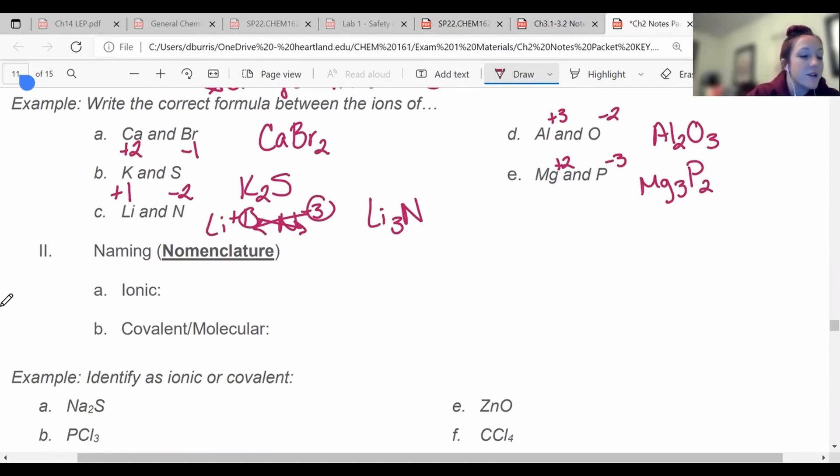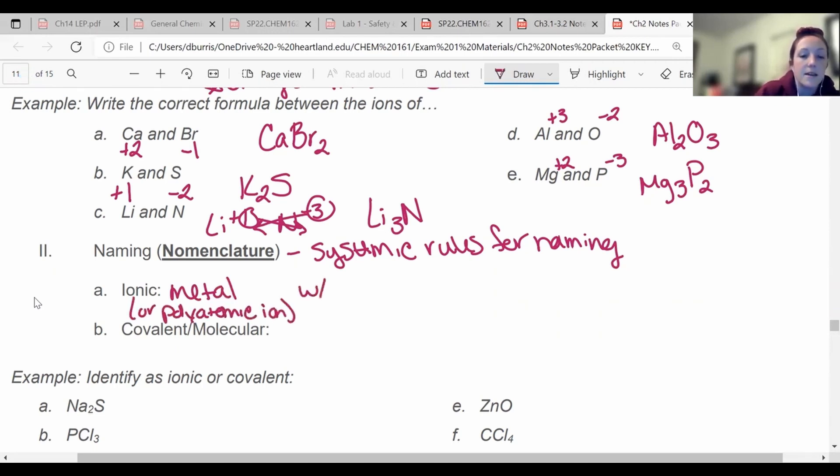Now on to naming. They have different nomenclature rules. That word nomenclature just means naming rules. And we have a very systematic way, systemic rules for naming, so everybody knows what you're talking about when you say the name. So ionic rules, remember those are going to be usually a metal or what's called a polyatomic ion, and I'll talk about those in a sec, with a nonmetal. Whereas a covalent or molecular structure is going to be a nonmetal with a nonmetal. And there's different rules for naming them.